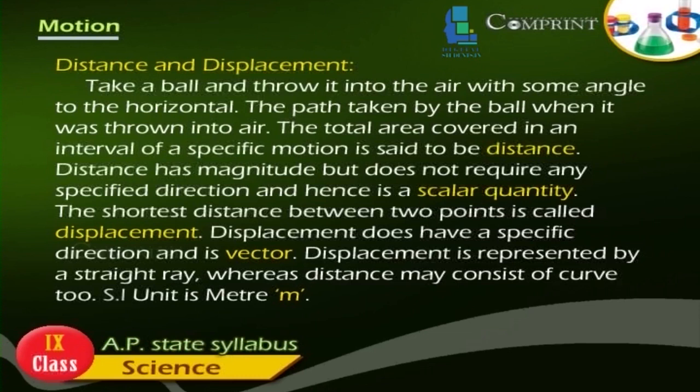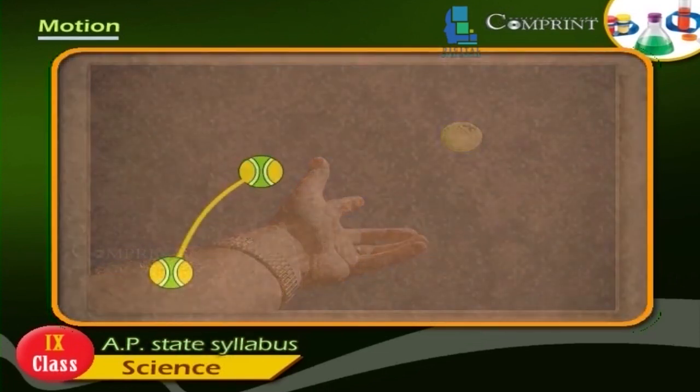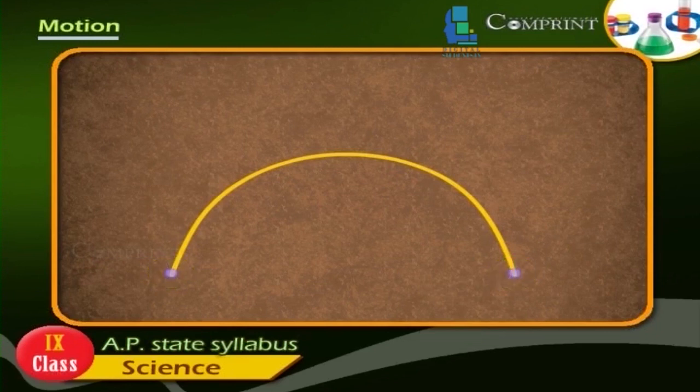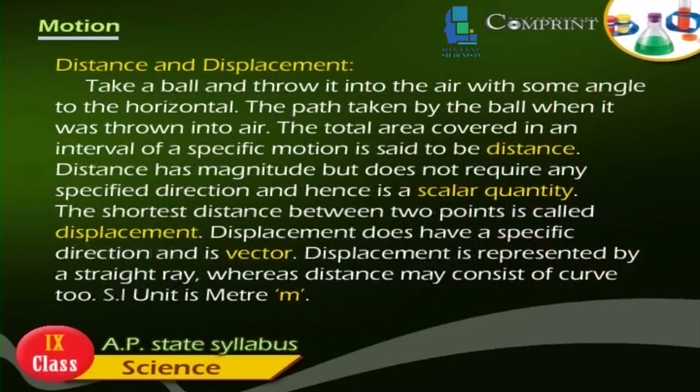Distance and displacement: Take a ball and throw it into the air with some angle to the horizontal. The path taken by the ball when it was thrown into air. The total area covered in an interval of a specific motion is said to be distance. Distance has magnitude but does not require any specific direction and hence is a scalar quantity.